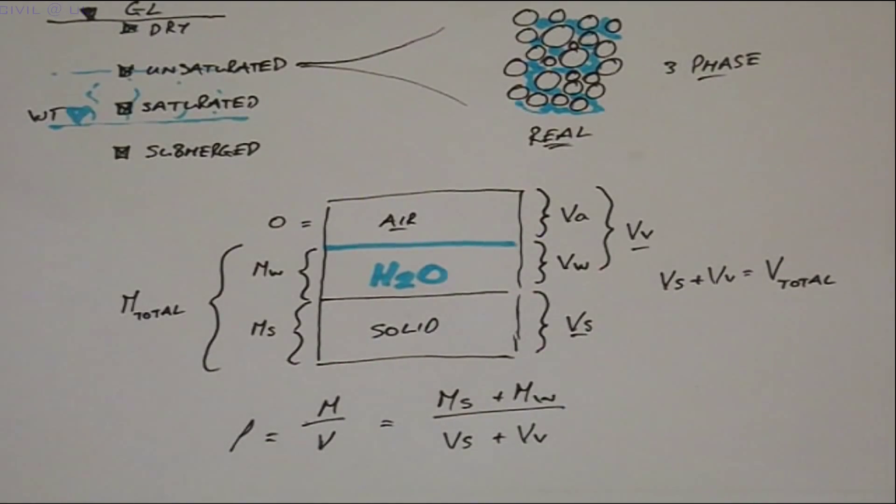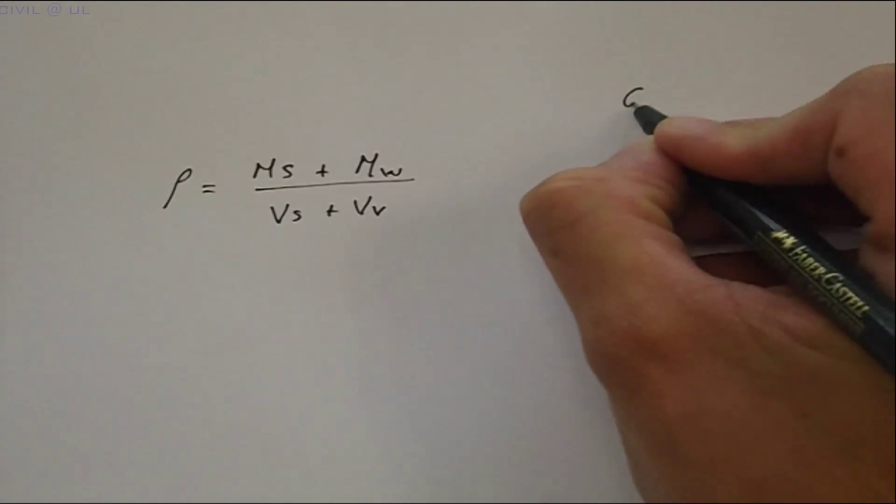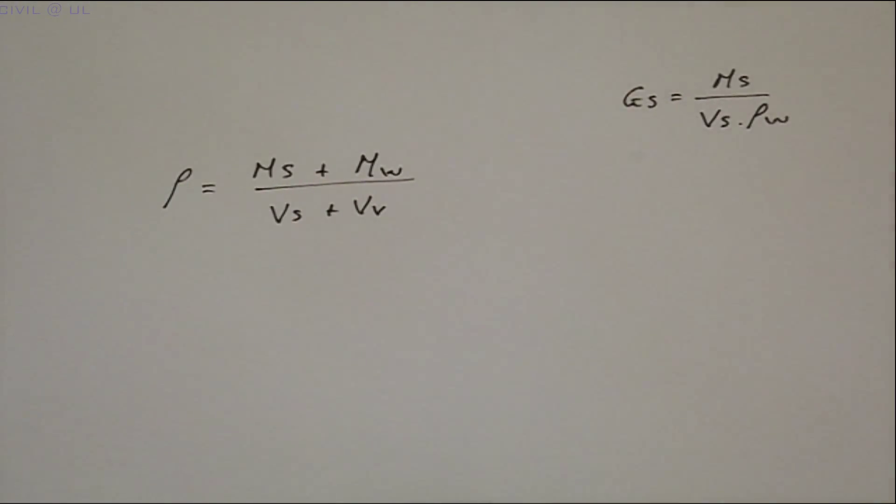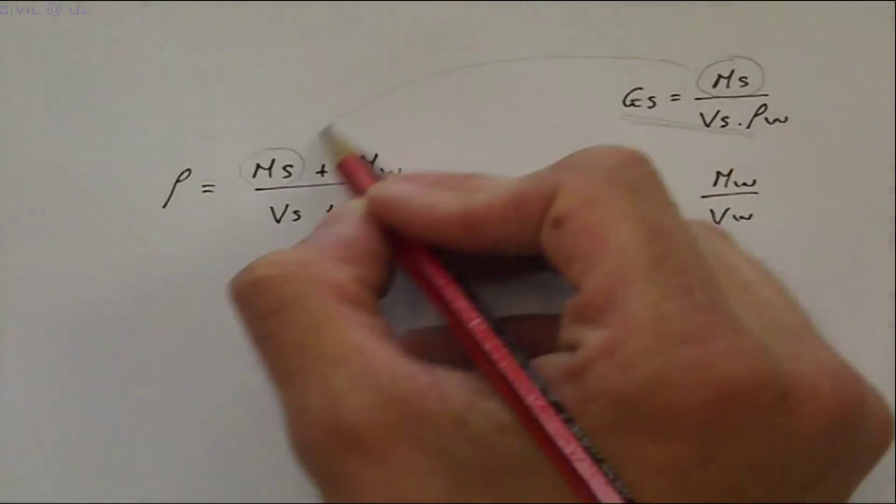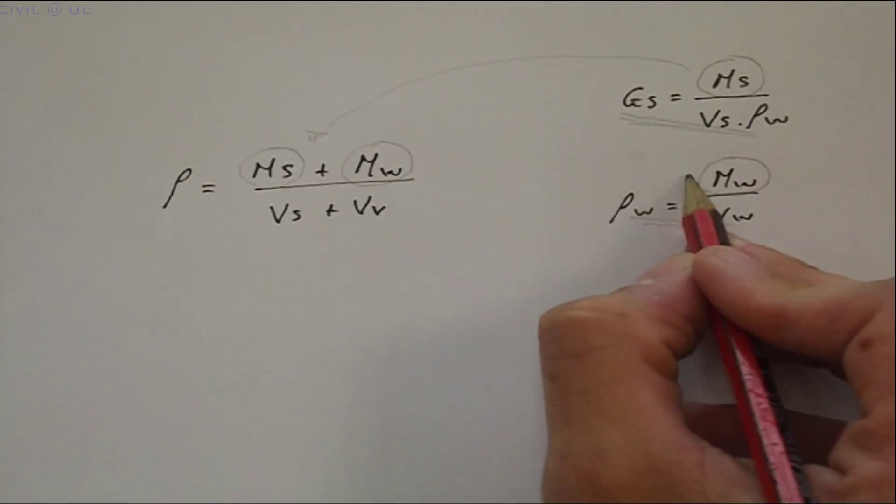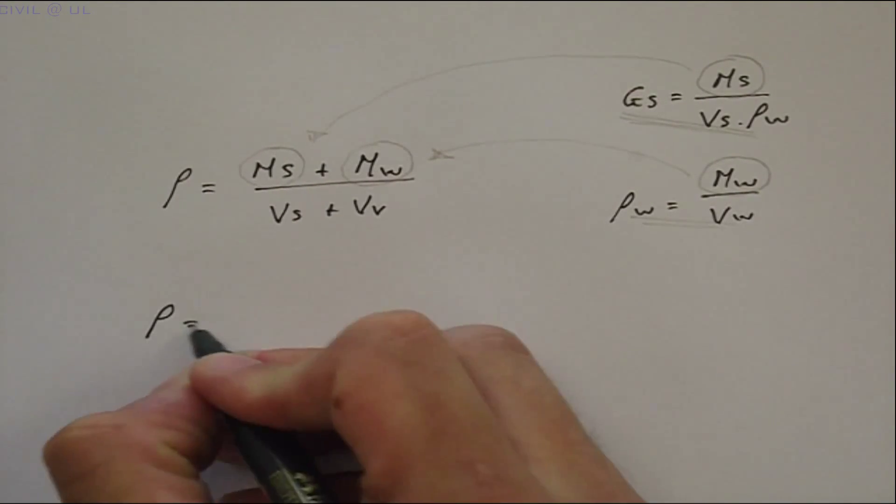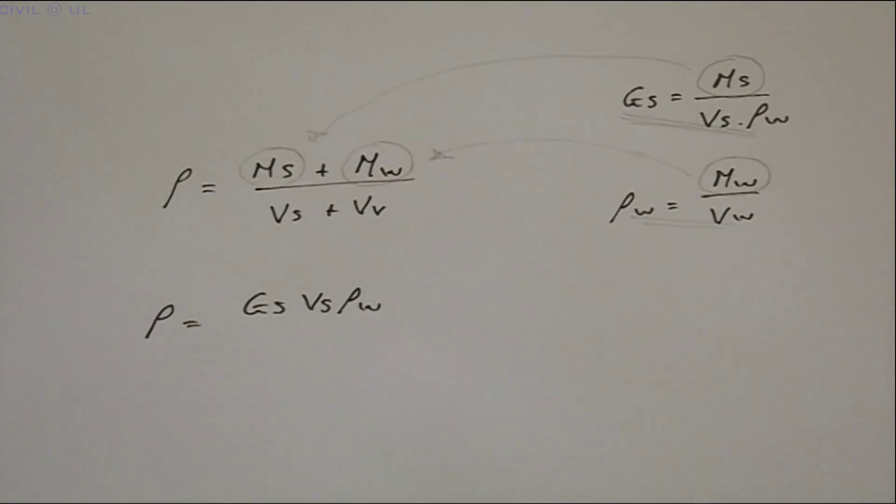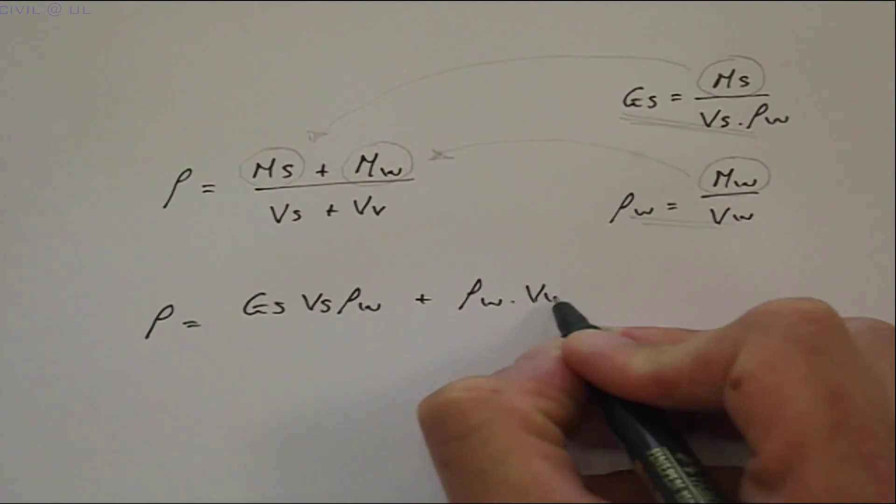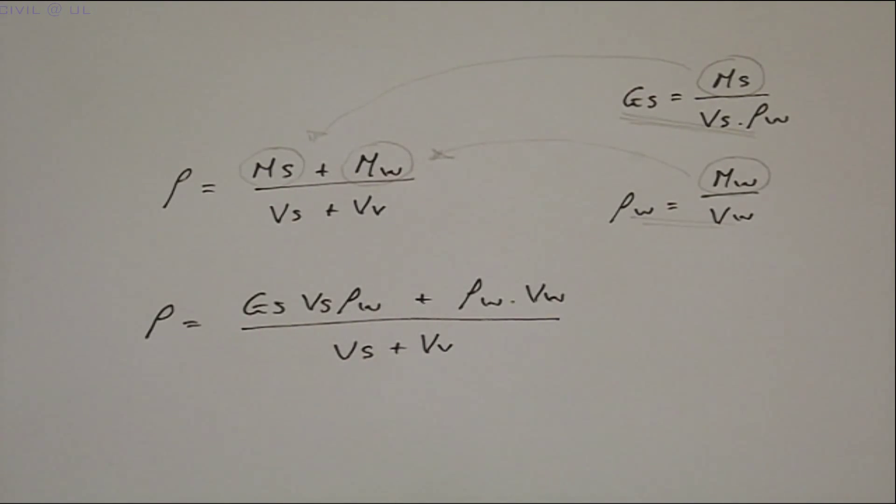We can now draw on our five definitions defined earlier to make appropriate substitutions. For example, from the definition of GS, we can substitute GS times VS times ρW for MS. Similarly, MW can be replaced by ρW VW, giving us density now equal to GS VS ρW plus ρW VW, all divided by VS plus VV.